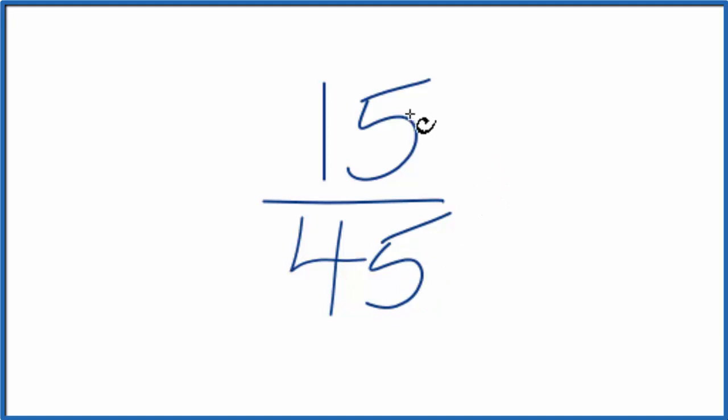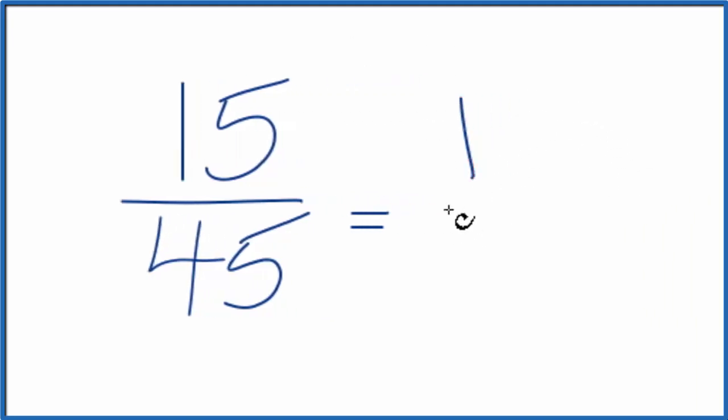You might know that 15 goes into 45 three times. We can simplify by dividing the numerator by 15: 15 divided by 15 is 1. Then the denominator: 45 divided by 15 is 3. So 15/45 simplifies to 1/3, which can't be reduced further.